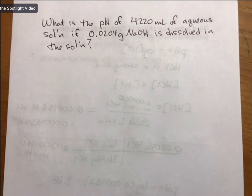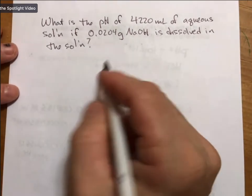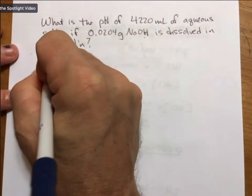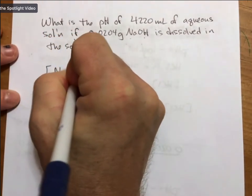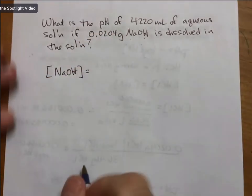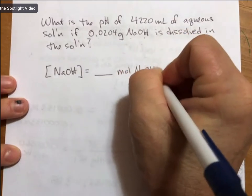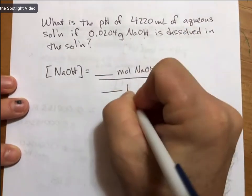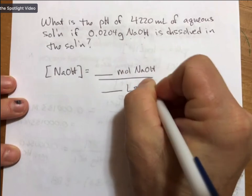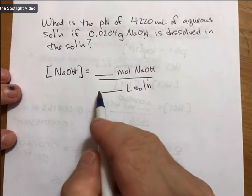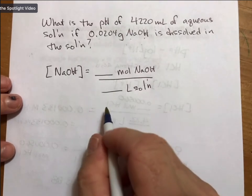Now we have sodium hydroxide, and we're going to figure out the concentration of sodium hydroxide. It's the same process - it's going to be moles of sodium hydroxide divided by liters of solution. Then we will find the concentration.